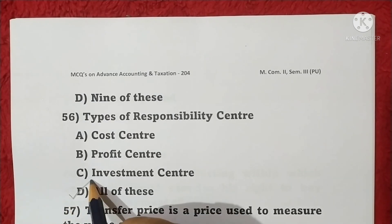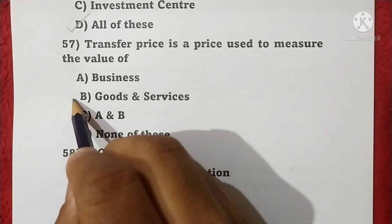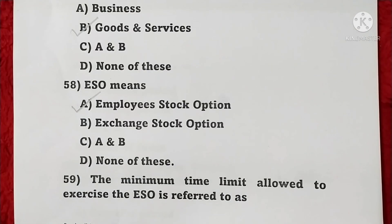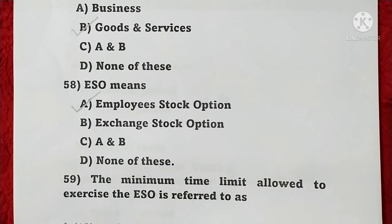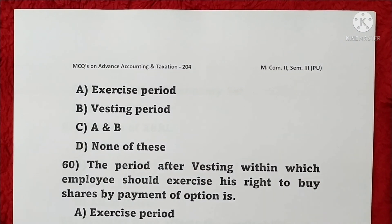Question 57: Transfer price is a price used to measure the value of goods and services — option B is correct. Question 58: ESO means Employee Stock Option — option A is correct. Question 59: The minimum time limit allowed to exercise the ESO is referred to as the vesting period — option B is correct.